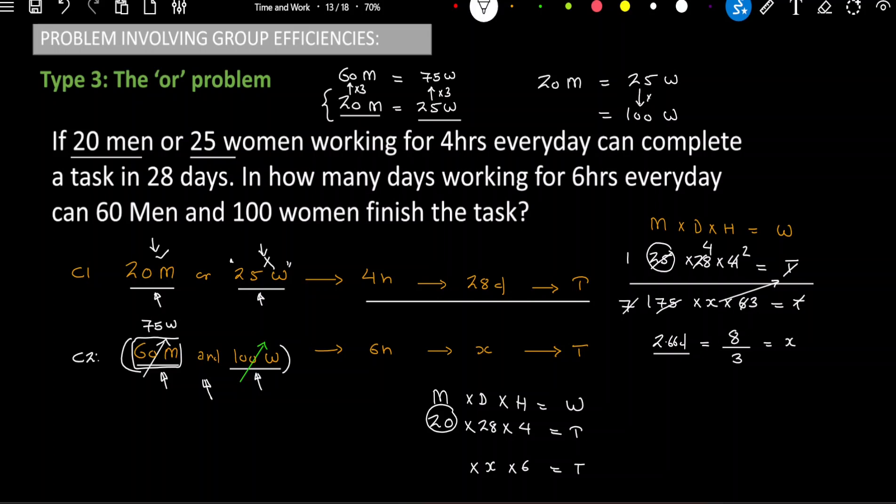100 is 4 times of 25. So, I will use the same relation in the left hand side. I get to know if I want to replace 100 women, I have to introduce 80 men. So, in place of 100, just write 80 men. And now, this task is easy. 60 men plus 80, you will get 140. So, just write 140 here.